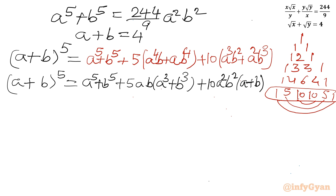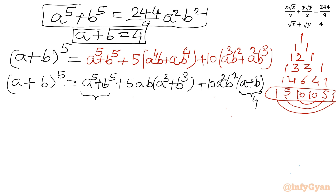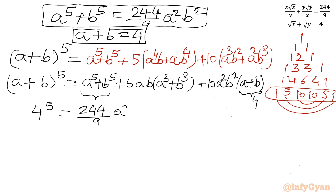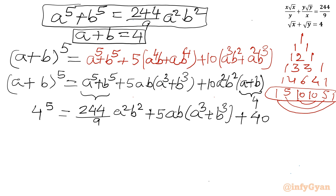Now I will substitute values. Since a + b = 4, I write 4⁵ on the left-hand side. For a⁵ + b⁵, I substitute from equation 1: (244/9)a²b². So we have: 4⁵ = (244/9)a²b² + 5ab(a³ + b³) + 10 · 4 · a²b², which gives 4⁵ = (244/9)a²b² + 5ab(a³ + b³) + 40a²b².